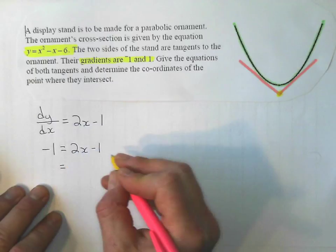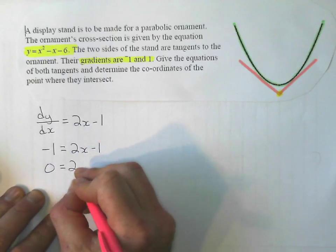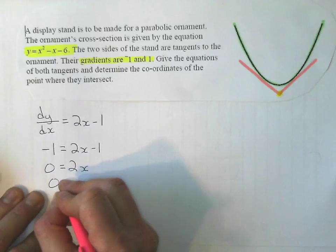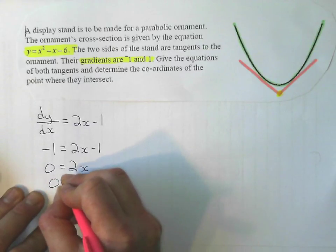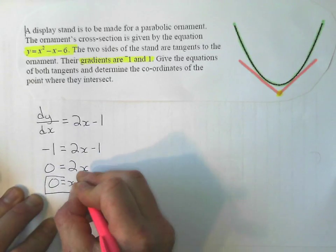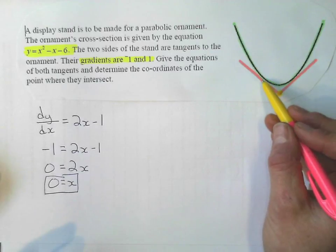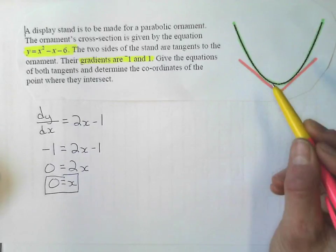I solve for x here, and I get 0. That just means my x-coordinate right here is 0.